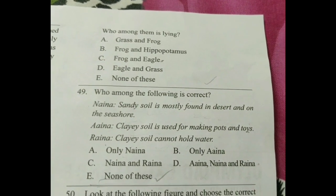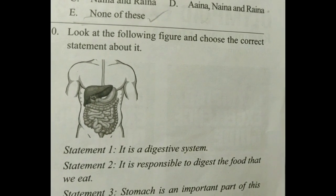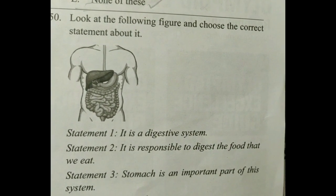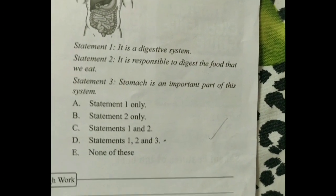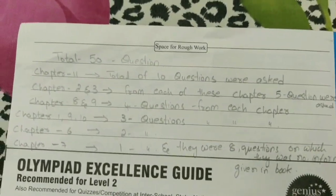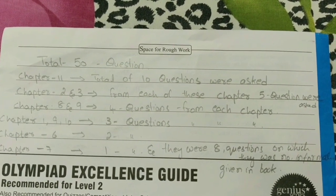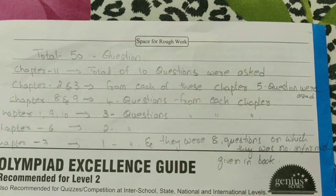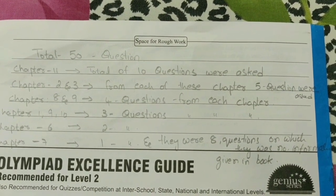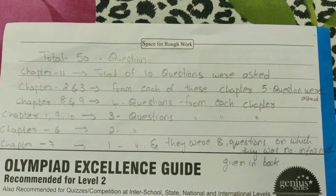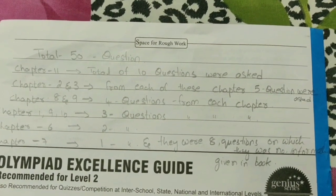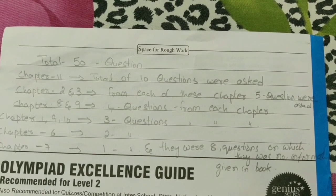I'm not sure about Question 49 — if you know the answer, write it in the comments. Question 50: Look at the following figure and choose the correct statement: Statement 1 — it is a digestive system; Statement 2 — it is responsible for digesting the food we eat; Statement 3 — the stomach is an important part of this system. The correct answer is D. Coming to the analysis: the exam has 50 total questions. Ten questions came from Chapter 11 (Reasoning and Aptitude); 5 each from Chapters 2 and 3; 4 each from Chapters 8 and 9; 3 each from Chapters 1 and 10; 2 from Chapter 6; 1 from Chapter 7; and 8 questions had no information provided in the study material.